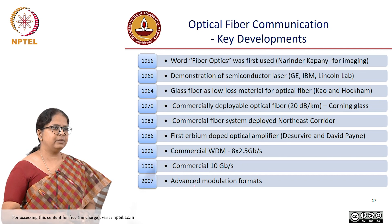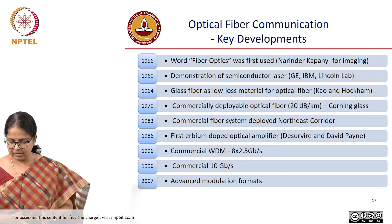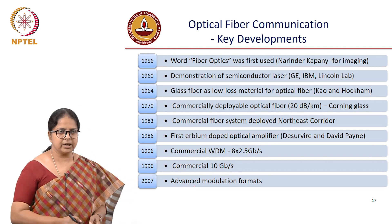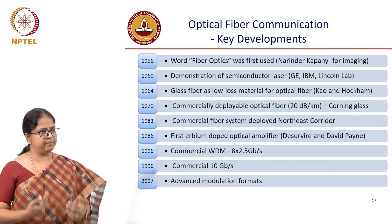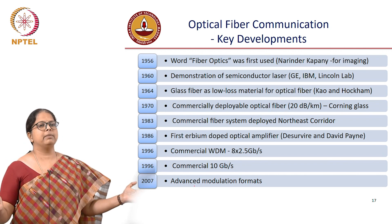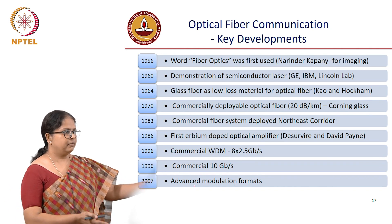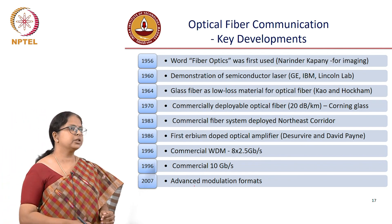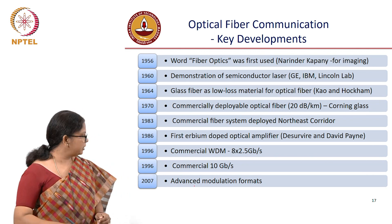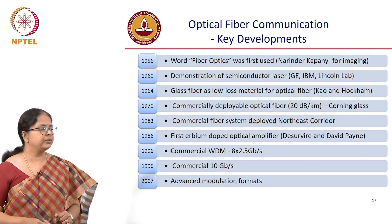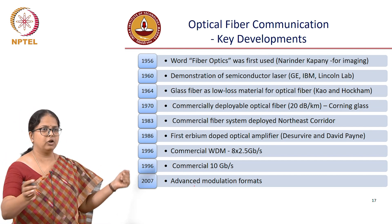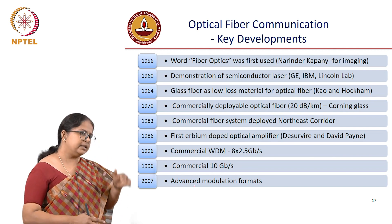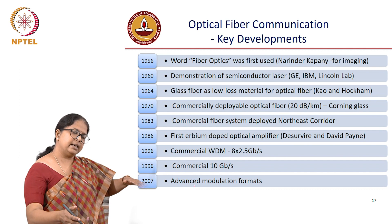Then came the amplifiers — a major breakthrough. In 1986, De Servier and David Payne simultaneously demonstrated an Erbium-doped fiber amplifier, which we will study in this course. With amplifiers that could amplify multiple colors, there was no looking back for optical fiber communication. The first commercial WDM — wavelength division multiplexing — system was deployed in 1996, achieving 8 channels at 20 gigabits per second for long distances. The commercial 10 gigabits per second standard also came in 1996.